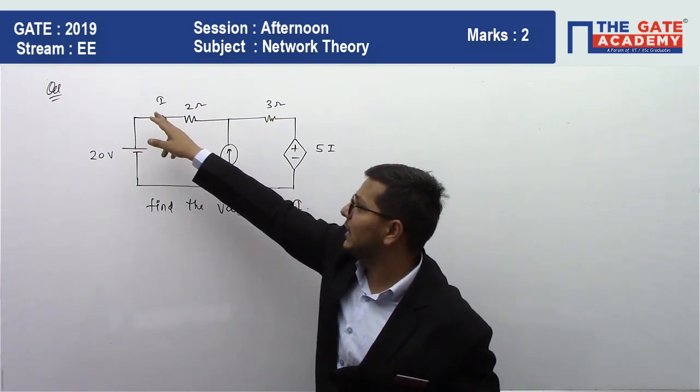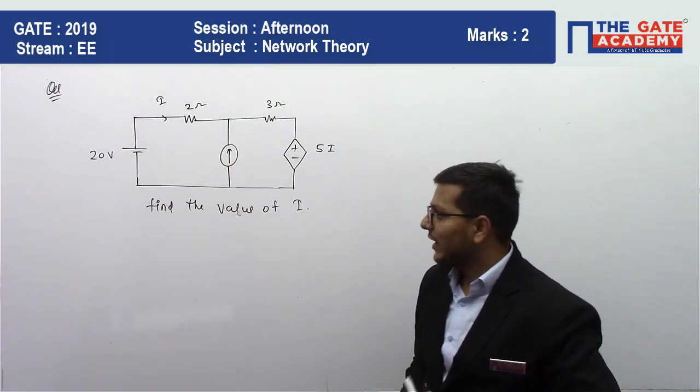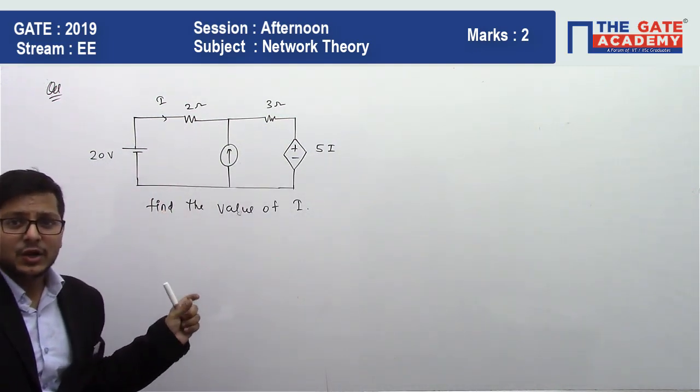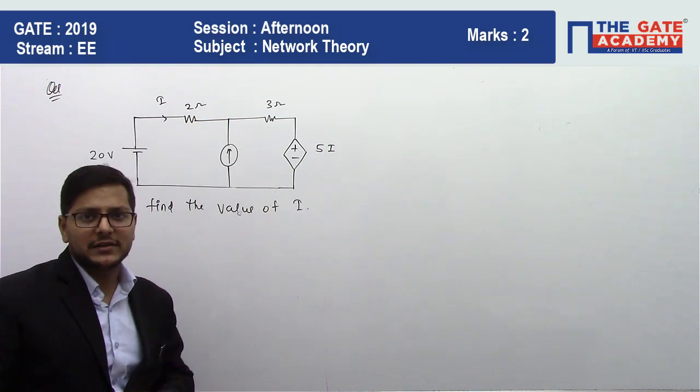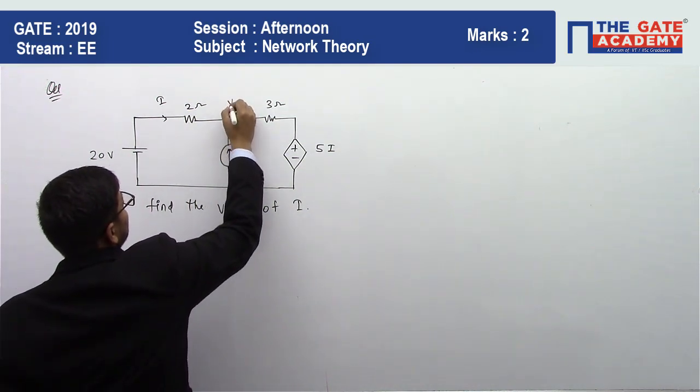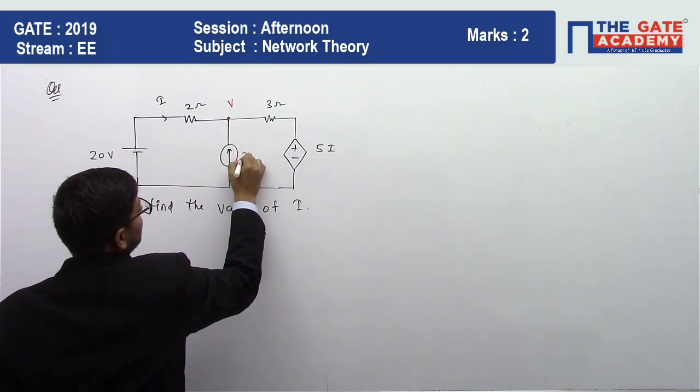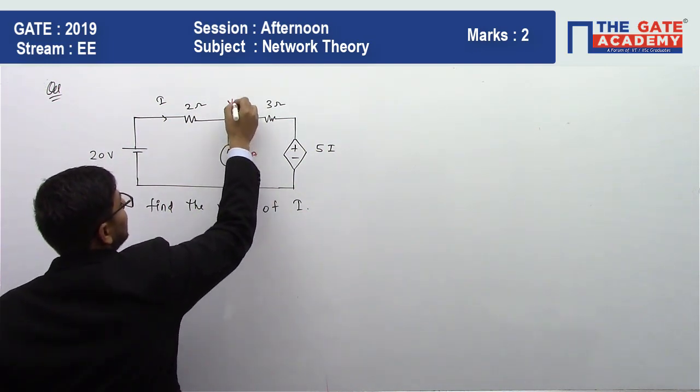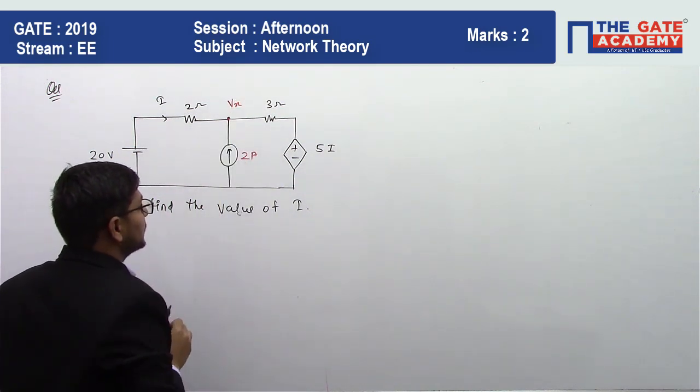About this question, to solve it, the best method is nodal analysis. Just apply nodal analysis and solve this problem. This current is 2 ampere. Let this voltage be Vx. Just apply the nodal analysis and solve to find the value of I.